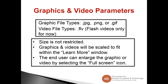A little about graphics and video parameters. Graphics have to be .jpeg, .png, or .gif files. Video file types have to be .flv — that's flash video. As we transition to the new cloud version of A2J Author, that may be changing, but for now it has to be flash video with A2J Author 4. The size is not restricted — graphics and video are scaled to fit within the Learn More window automatically, and the end user can enlarge them using the full screen icon. There are many free programs for editing, resizing, and changing file types, so reach out to the listserv if you need recommendations.